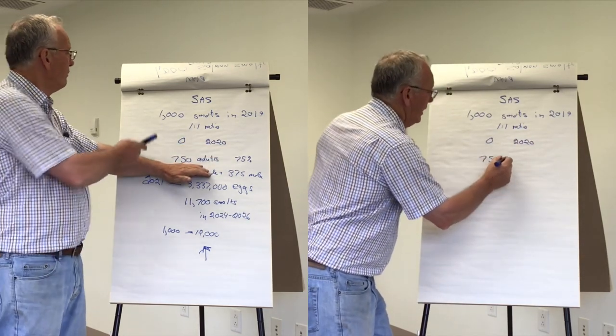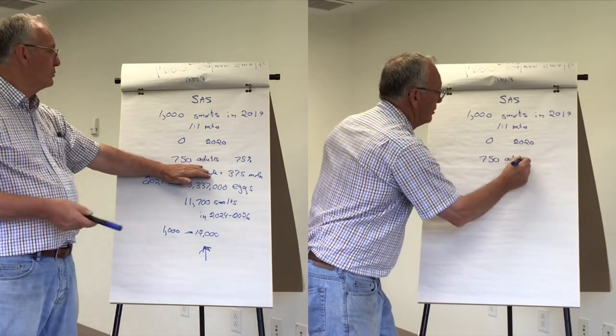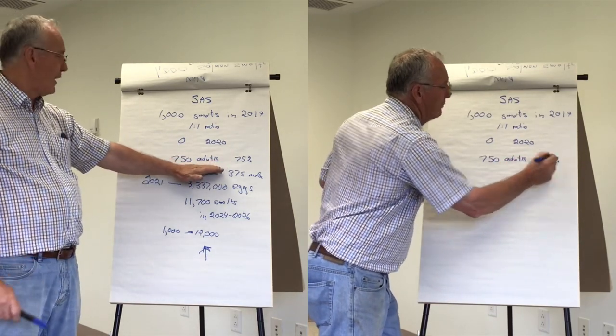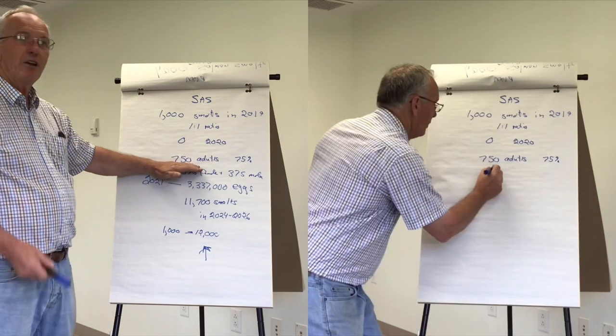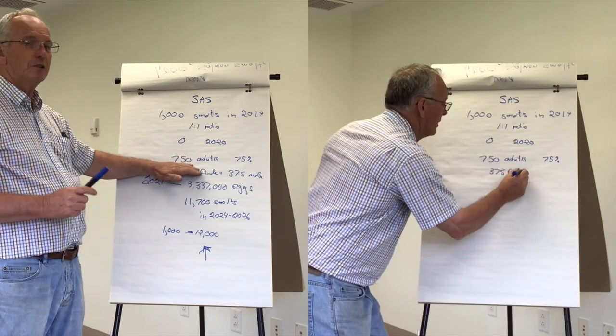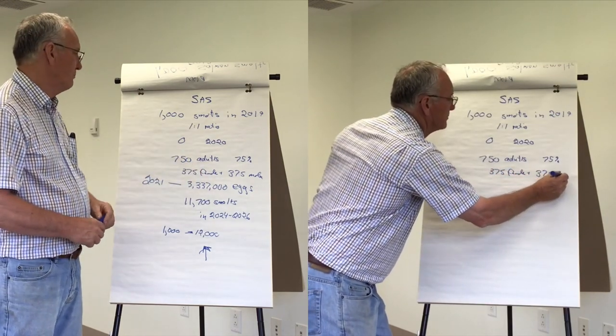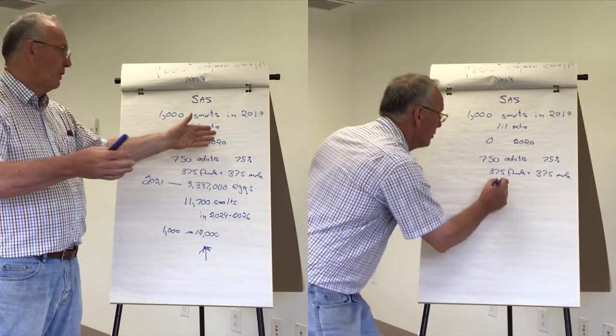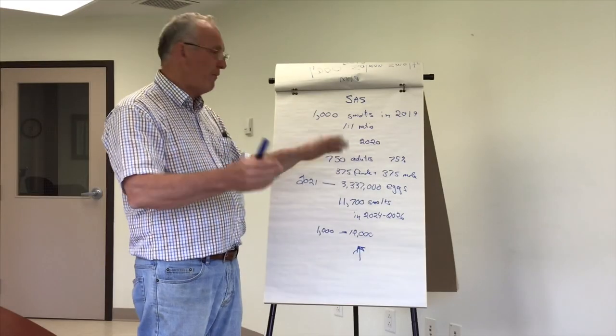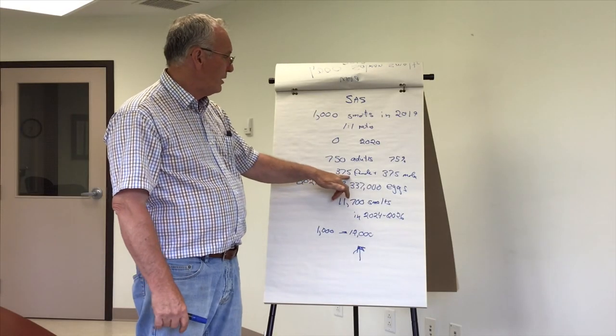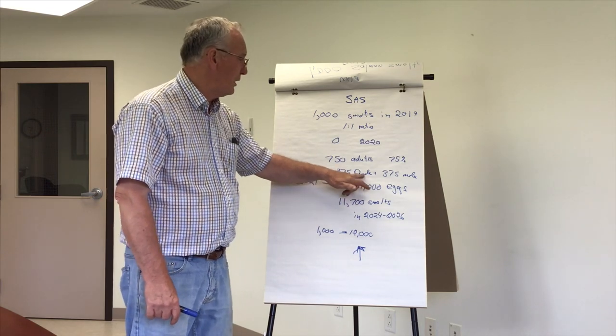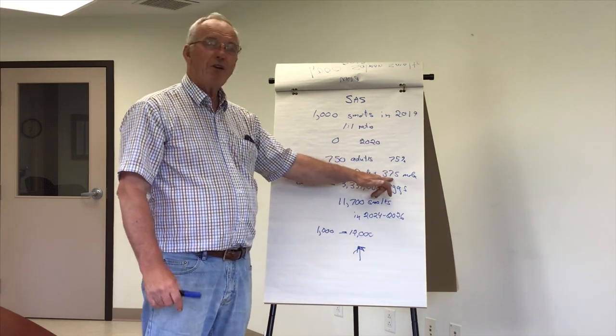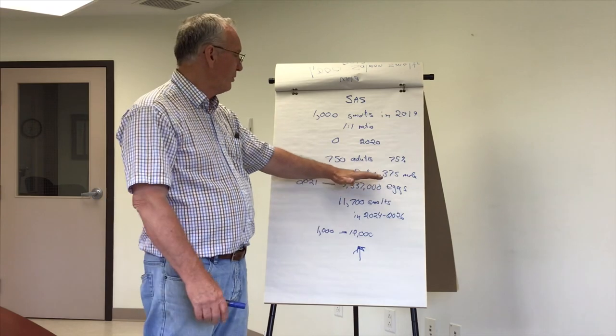However, from these 1,000 smolts, we would project a 75% survival in the hatchery and we should get 750 adults to put in the river. We assume the ratio is still half male, half female. So that would translate to 375 female salmon and 375 males going into the river.